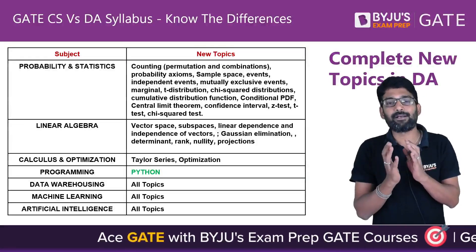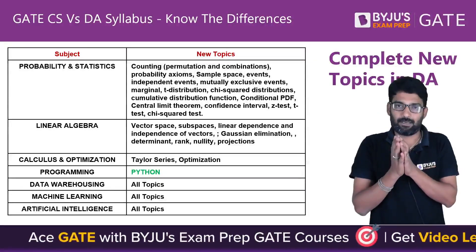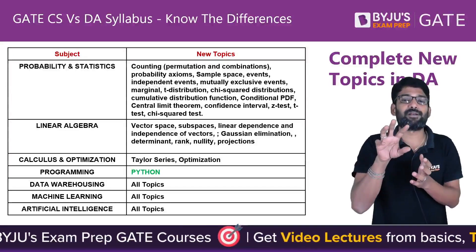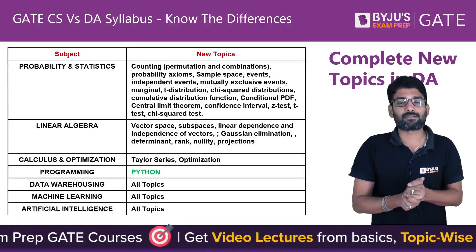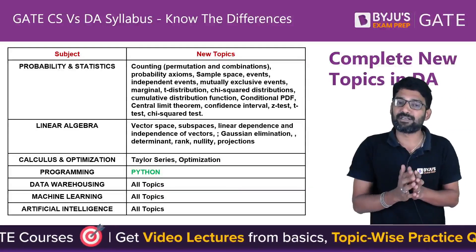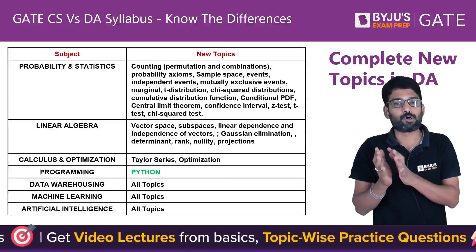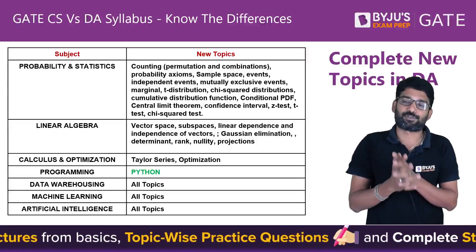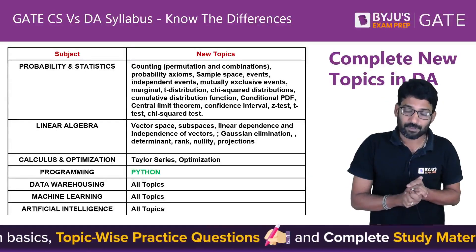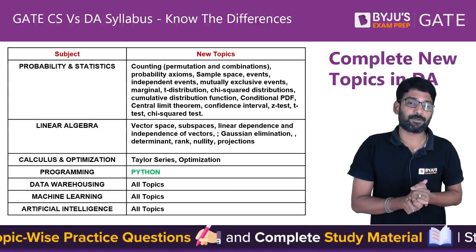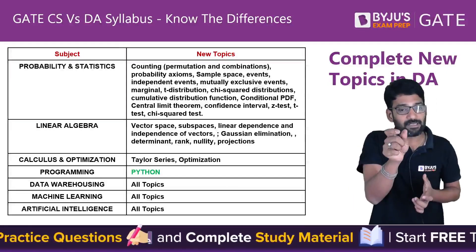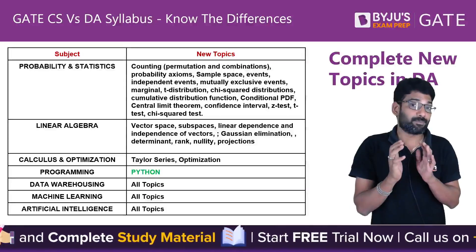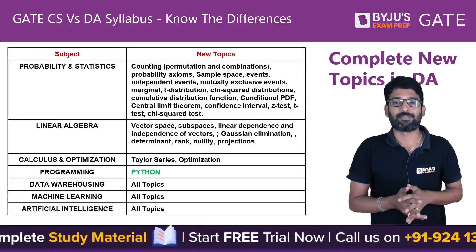For Linear Algebra, the topics newly added in DA that a CS student will find new include: vector space, subspaces, linear dependence and independence of vectors, Gaussian elimination, determinant, rank, nullity, and projections. If you are an EC aspirant, these topics may already be covered in your Engineering Maths, but for computer science students, these are new.